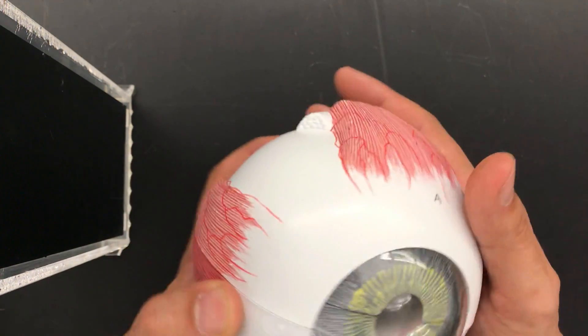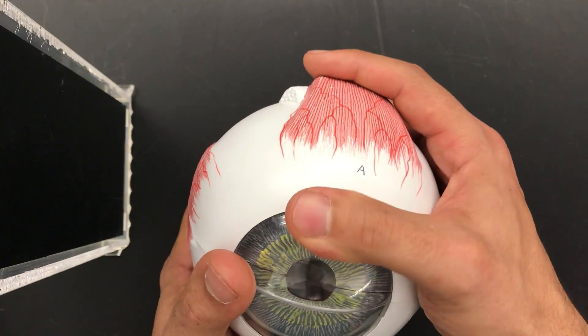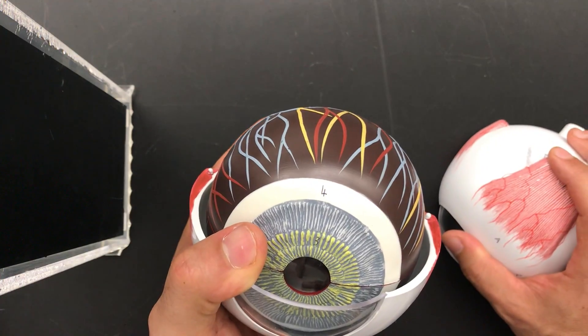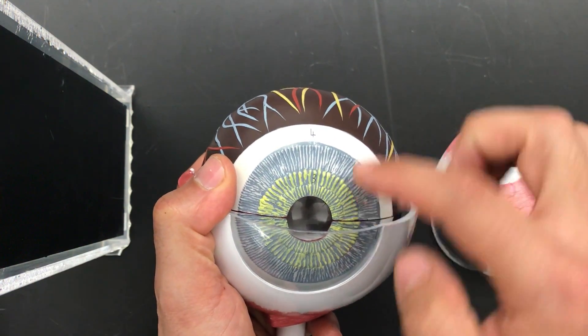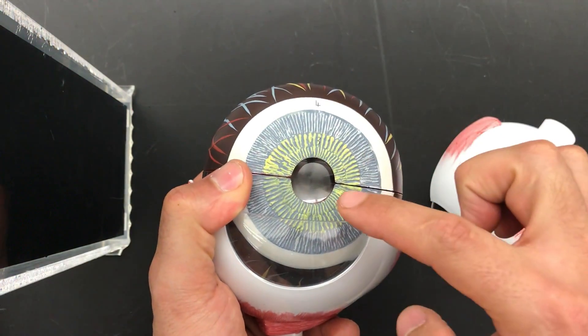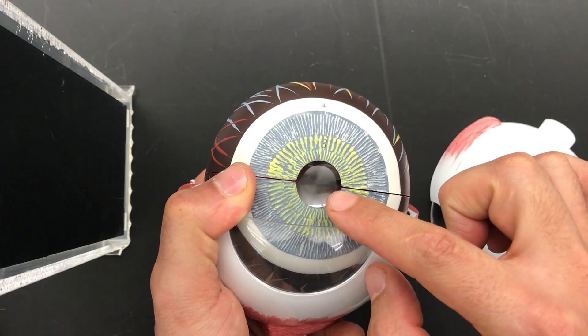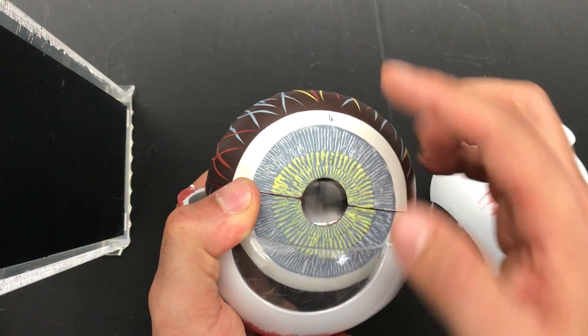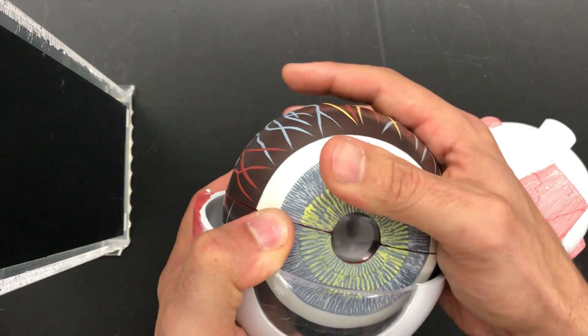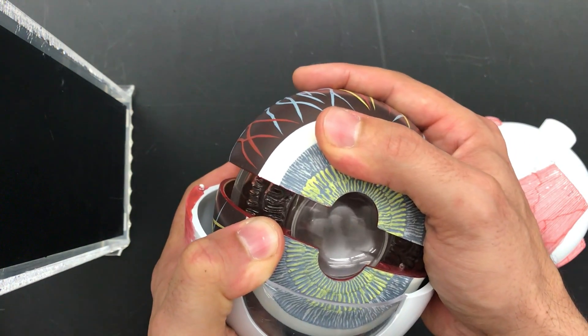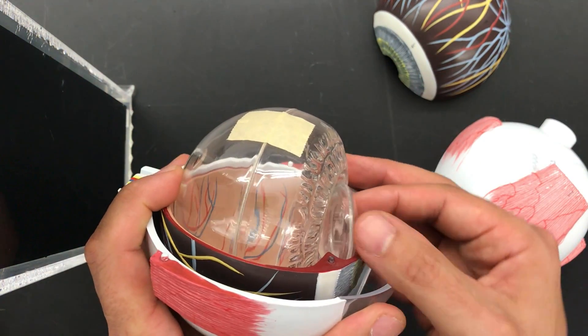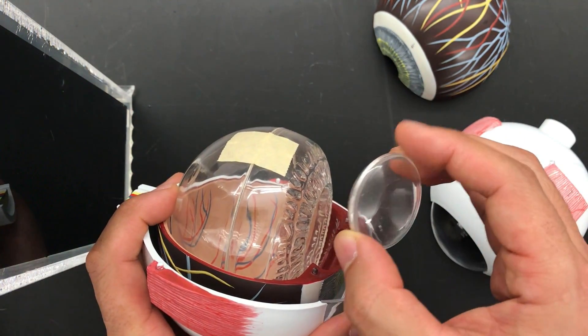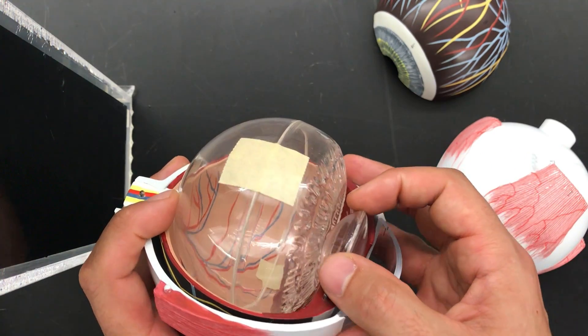As we remove these layers, this colored area is the iris, and this hole is the pupil. Just behind the pupil is the lens. Here is your lens.